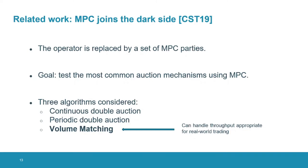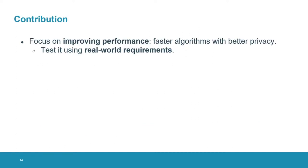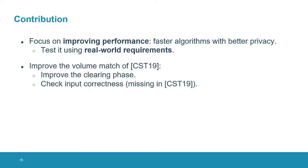In the volume matching algorithm, the orders have no price information and are matched based only on their volume, and then the price is taken from some reference exchange. What we do here is focus on building algorithms that are faster and have better privacy than before. We propose two algorithms: the first is an improvement of the volume matching from the previous work, where we add a check of input correctness, which fixes a problem that wasn't addressed before, and we also make some changes to the procedure for querying orders.